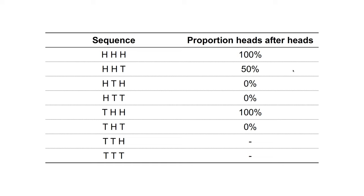In the table's first row, heads-heads-heads, the first flip is a head and another head follows that first flip. After the second flip, a head, we also have a head. There is no flip after the third head. So 100% of the heads in that sequence followed by another flip are followed by a head. In the second row, heads-heads-tails, a head follows 50% of the heads. In the third row, there is one head followed by another flip which is a tail, so none of the heads in that sequence are followed by a head. And so on, until the last two rows where there are no heads followed by another flip.